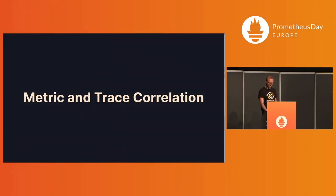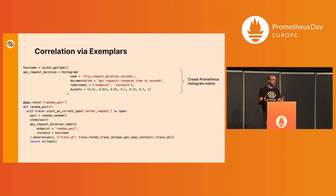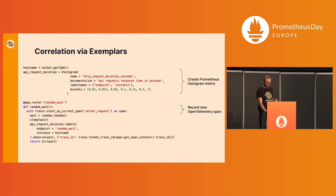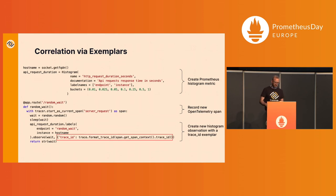Let's talk about metric and trace correlation first. One very common way is correlation via exemplars. Here we have an example of Python code instrumented with both Prometheus and OpenTelemetry. We're creating a histogram metric to measure the duration of API requests, and we're recording a new OpenTelemetry span every time a particular endpoint gets called. To correlate using exemplars, we add additional metadata when we observe a duration on that histogram — the exemplar is a set of attributes, in this case a trace ID, that references data outside the metric set.